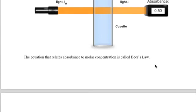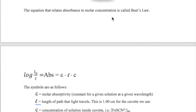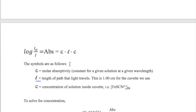The amount of light a solution absorbs depends on its molar concentration. The mathematical relationship is called Beer's Law and is shown here. Epsilon is the molar absorptivity, which is a constant value for a given solution at a given wavelength. L represents the length of the path that light travels, which is 1 cm in our example. Lastly, C is the molar concentration of the sample.